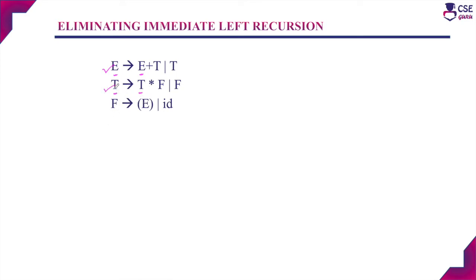The second production T derives T star F or F is also left recursive, and is also a case of immediate left recursion. The third production F derives E or id is not left recursive. So in this grammar we need to eliminate the left recursion in these two productions.